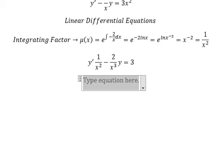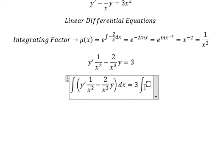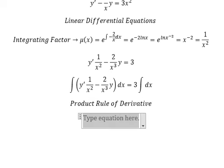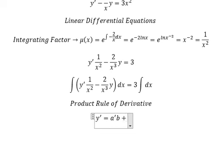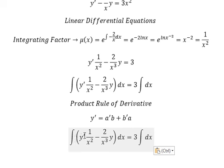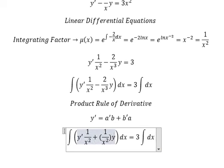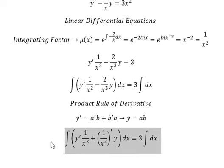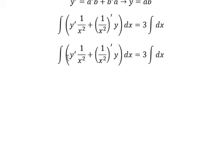Next we apply the integration to both sides. We can use the product rule for the derivative, so we have the first derivative of y equals the derivative of A multiplied by B, plus the derivative of B multiplied by A. So we have the derivative of A multiplied by B, and then the derivative of B.